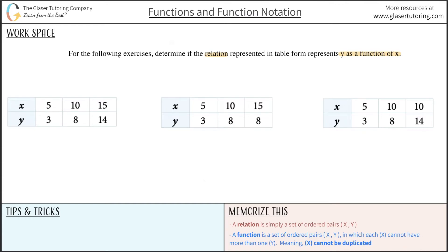So if you were to now highlight the x values of your relation of the first example, so here we have an x value of 5, 10, and 15. In order for this thing to be a function, these x values here, here, and here cannot repeat, aka cannot be duplicated.